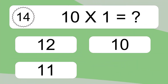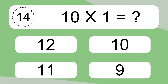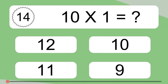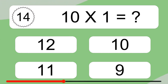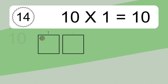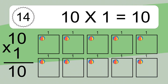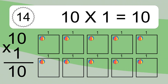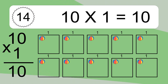10 times 1 equals what? 10 times 1 equals 10. We have ten boxes and each box has one colorful ball inside. If you count all the balls in all the boxes together, you will have ten times one balls. This equals ten balls.